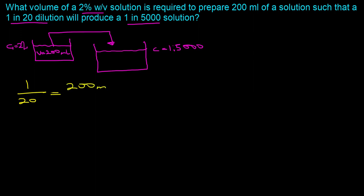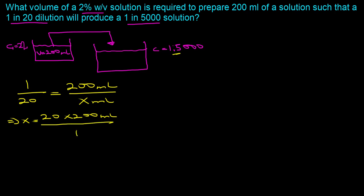Solving for x: x equals 20 times 200 milliliters divided by 1, which gives us 4000 milliliters. This 4000 milliliters is the total quantity being made, and it is what has a concentration of 1 in 5000.